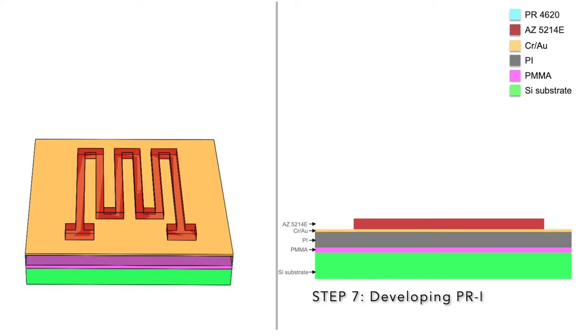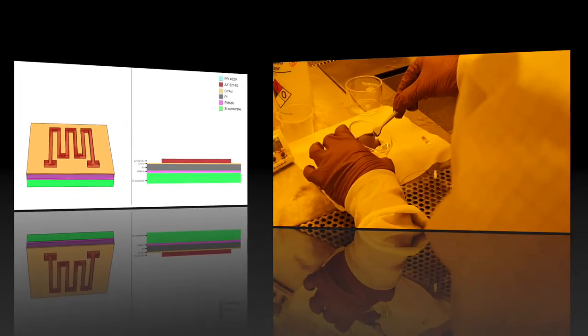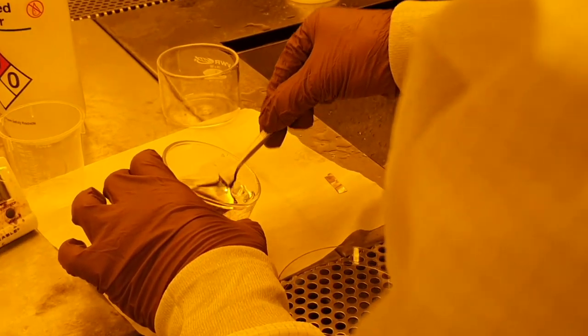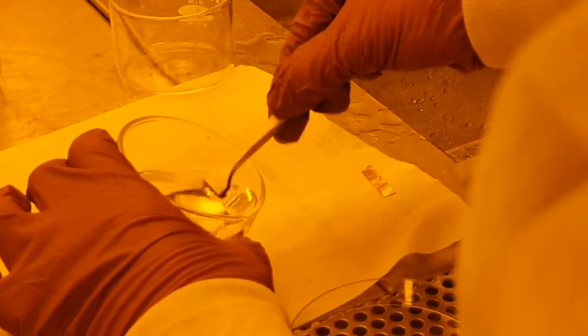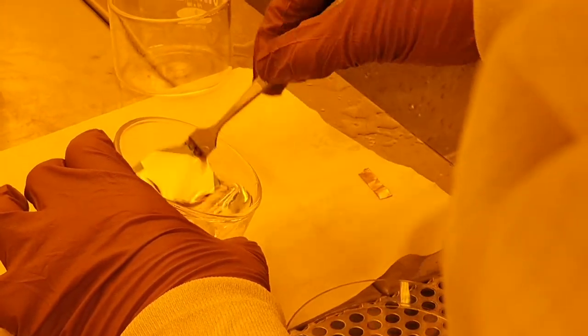The photoresist that was exposed to the UV light is now dissolved in the developer. Unexposed photoresist remains on the substrate. Its purpose is to protect the metal layer. Moreover, the unexposed photoresist will roughly define the geometry of our individual strain sensors.